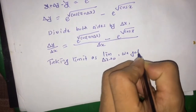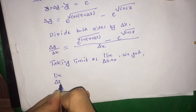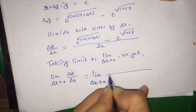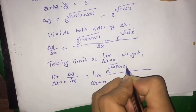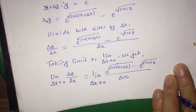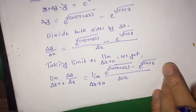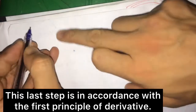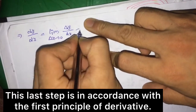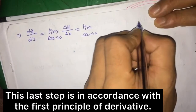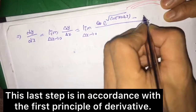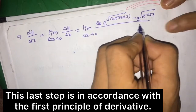Now applying the first principle, that is taking the limit as δx tends to 0, we get: limit δx tends to 0 of δy/δx is equal to limit δx tends to 0 of exponential root under cos(x + δx) minus exponential root under cos x, whole divided by δx.